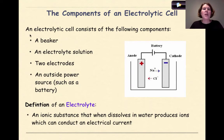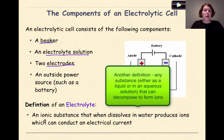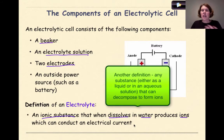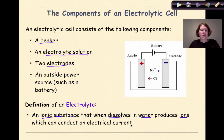Components of an electrolytic cell: an electrolytic cell consists of some type of container — in this case we'll call it a beaker — an electrolyte solution, two electrodes, and an outside power source such as a battery. An electrolyte is defined as an ionic substance that, when dissolved in water, produces ions which can conduct an electrical current. So it's any type of ionic compound — NaCl, KCl, KBr — anything that's going to break down into ions and therefore is able to carry a current through it.